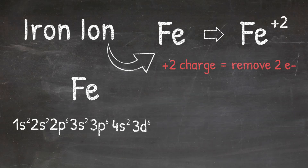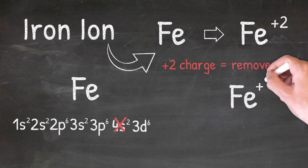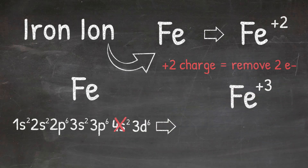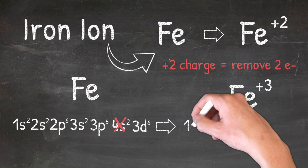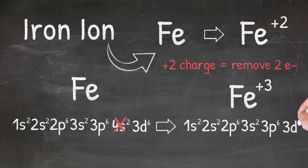It's important to remember that when we remove electrons we're going to remove from the outermost energy level. In this case it is not the last term 3d6, but it's going to be the 4s2. I know that that's the highest energy level because the number in front — the 4 — tells us the energy level, and 4 is the biggest number. So I'm going to remove the two electrons from the 4s orbital, and then write the electron configuration that's left over: 1s2, 2s2, 2p6, 3s2, 3p6, 3d6. This is the electron configuration for iron with a plus two charge.